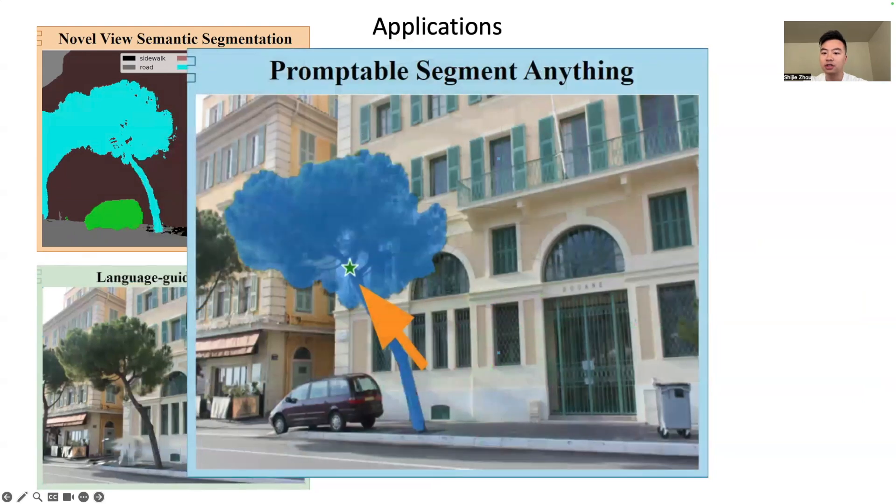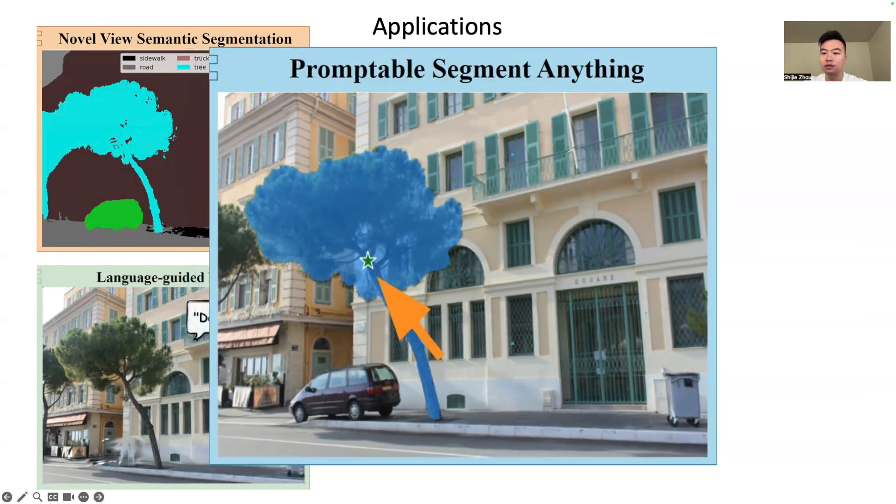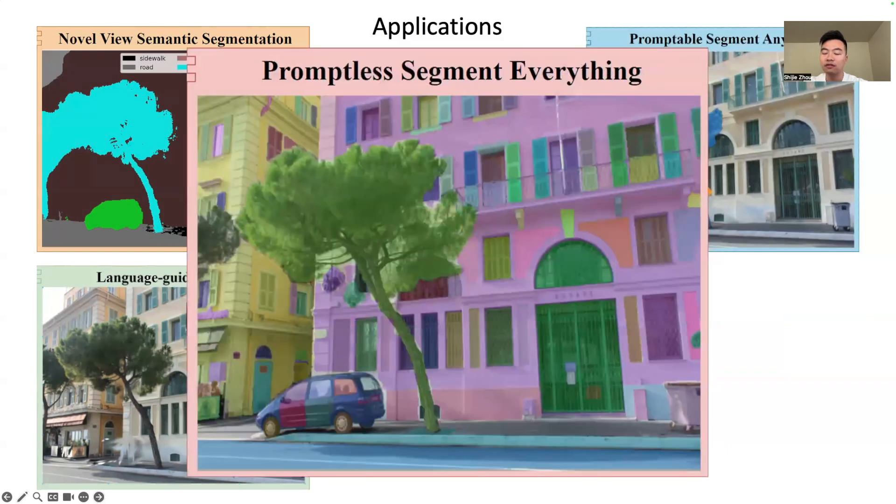By distilling features from the Segment Anything Model, the SAM, we can also achieve promptable segment anything in 3D using point prompt or box prompt. If you don't have any prompt, automatically segment everything in 3D is also possible.